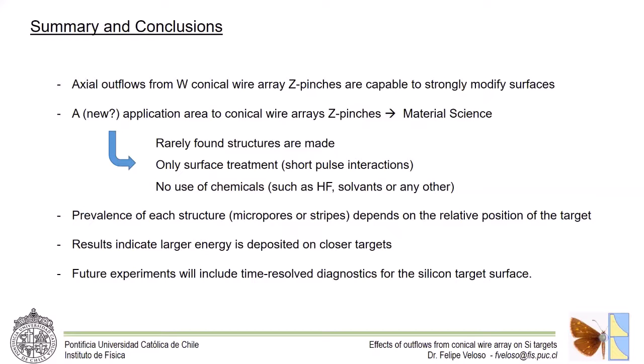The prevalence of each structure, either micropores or stripes, depends on the relative position of the target with respect to the array. In the case of micropores, larger energy for boiling is required, so closer position must be chosen. On the other hand, the farther the silicon is, the more uniform and ordered the stripes are.